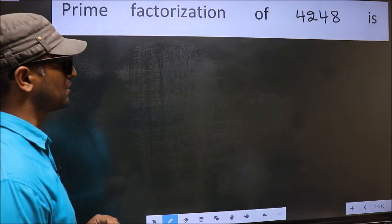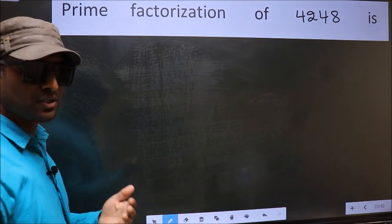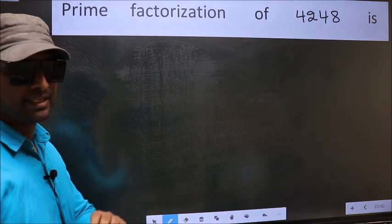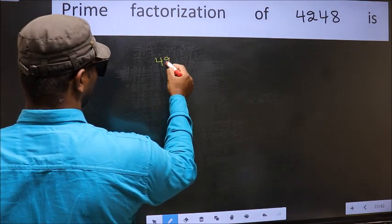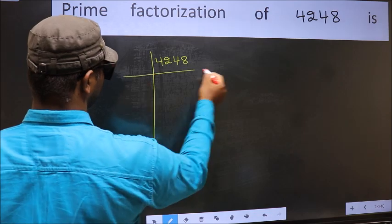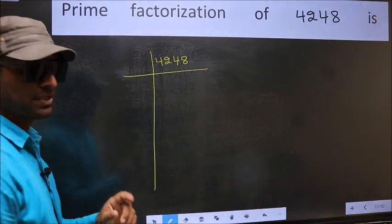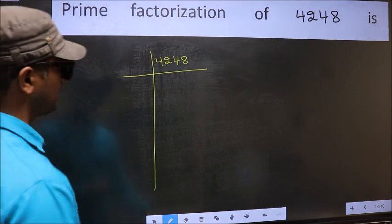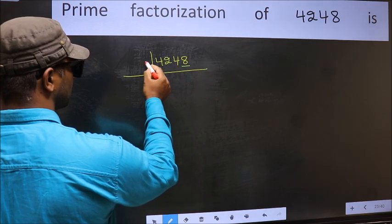Prime factorization of 4248. To do prime factorization, first we should frame it in this way: 4248. This is your step 1. Next, in this number, the last digit is 8, so take 2.